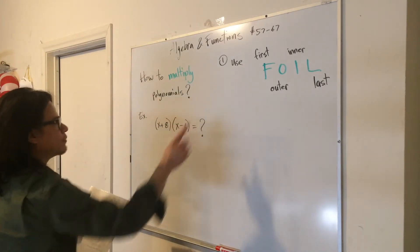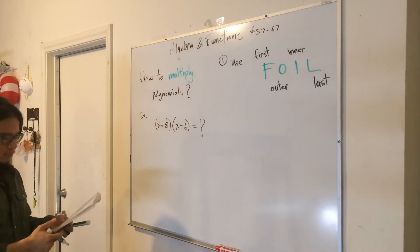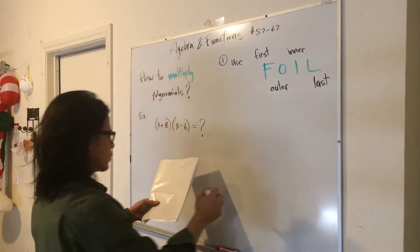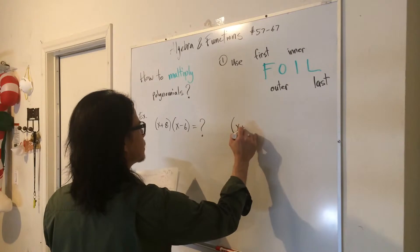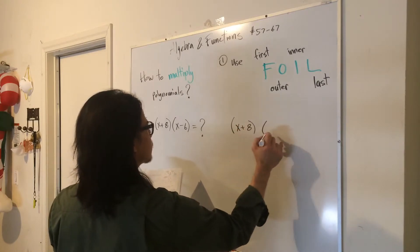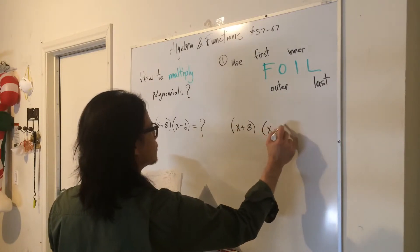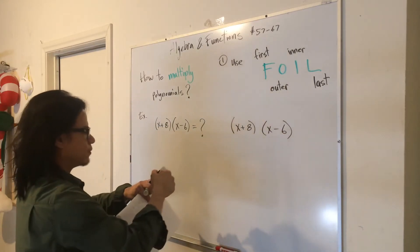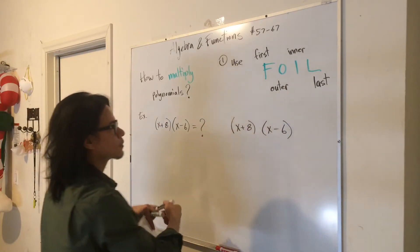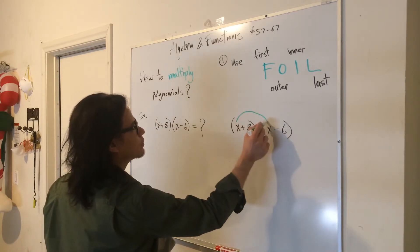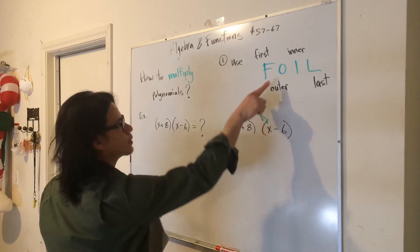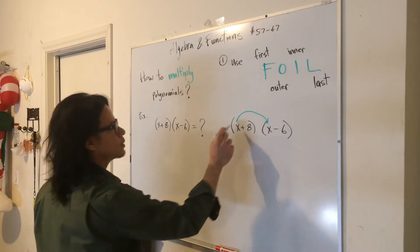So let's use FOIL. We're going to multiply x plus 8 and x minus 6 by way of FOIL. So that means take the first term, multiply by the first term.